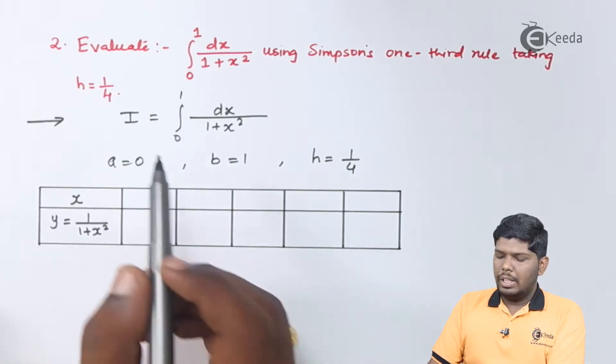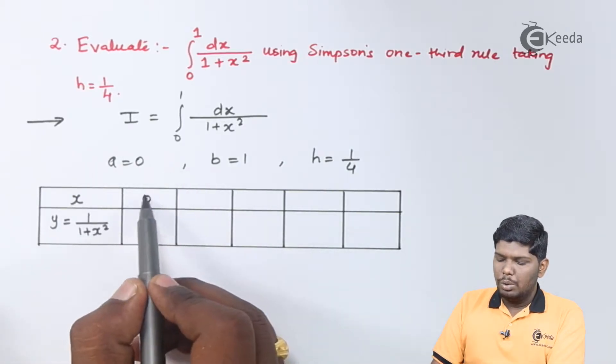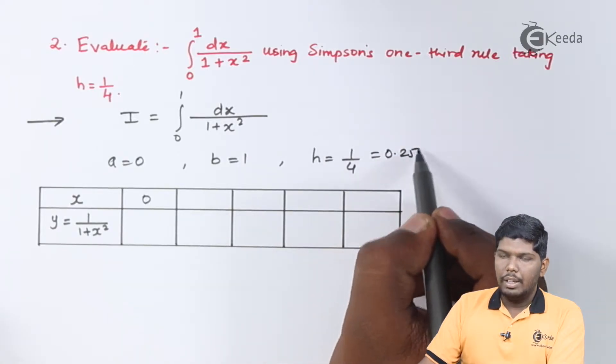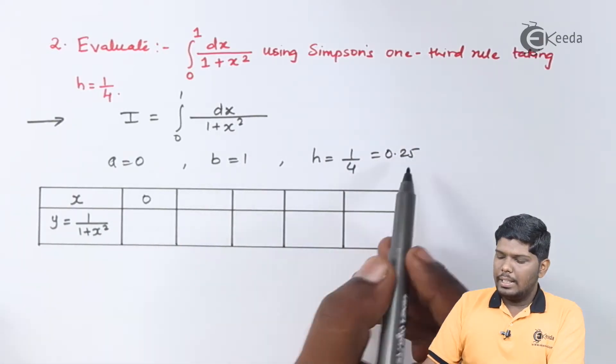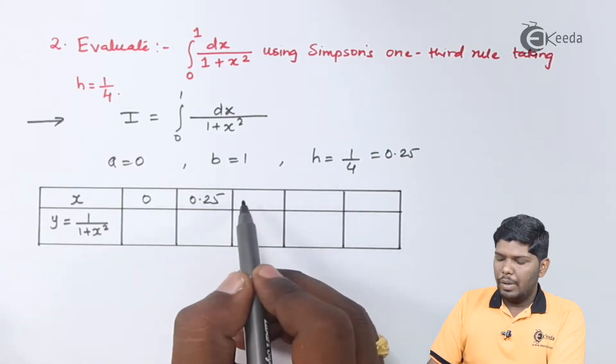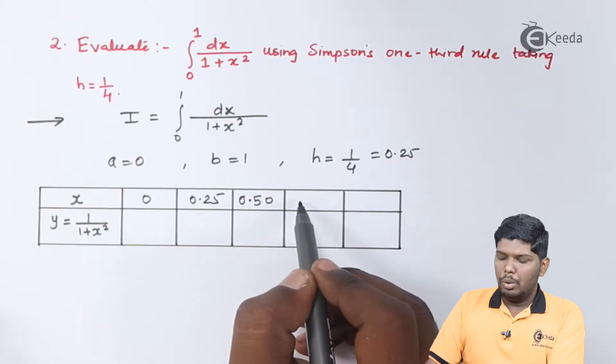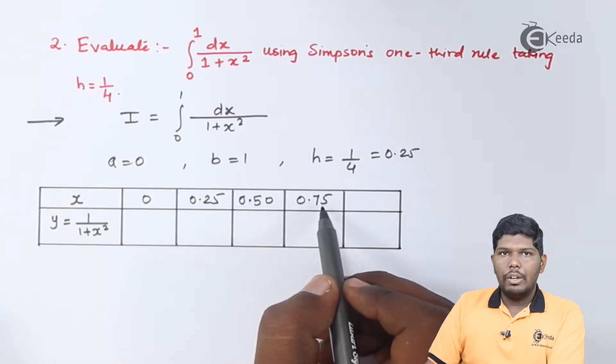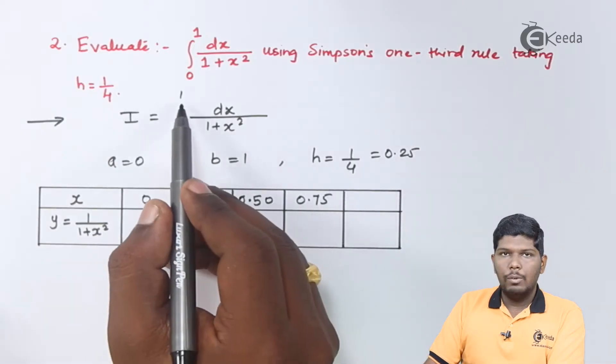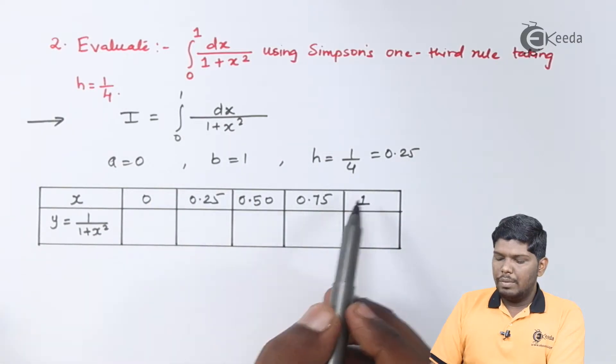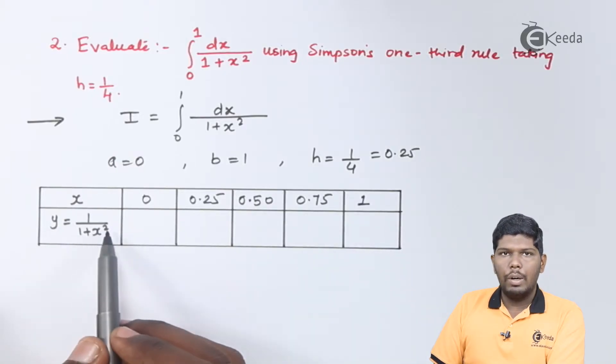So here the values of x will start from the lower limit 0 and since h is 1 by 4 that is equal to 0.25, we will add 0.25 to get 0.25, then 0.50, then 0.75, and finally 1. After that we will substitute these values in the given function 1 upon 1 plus x square.